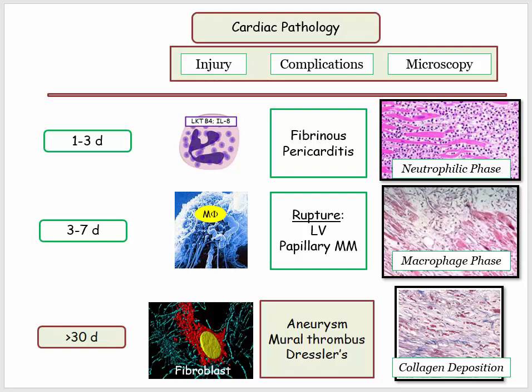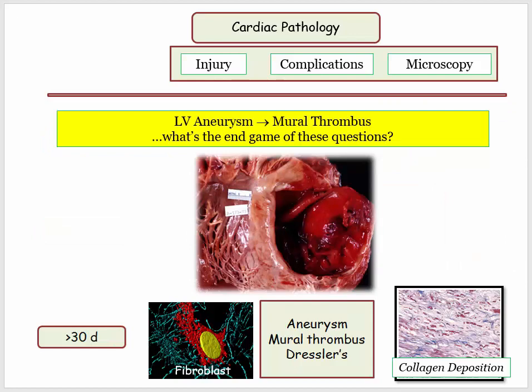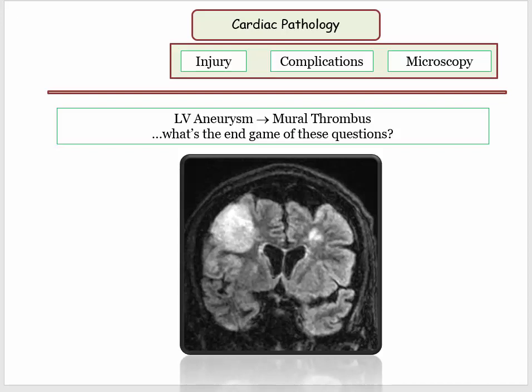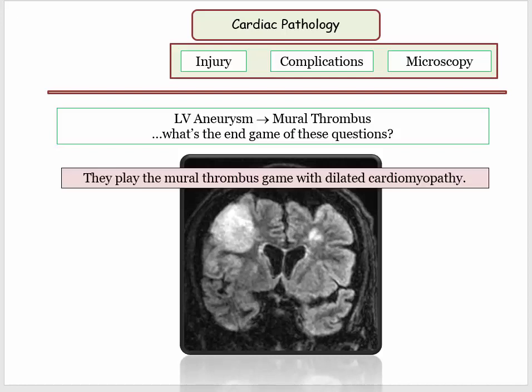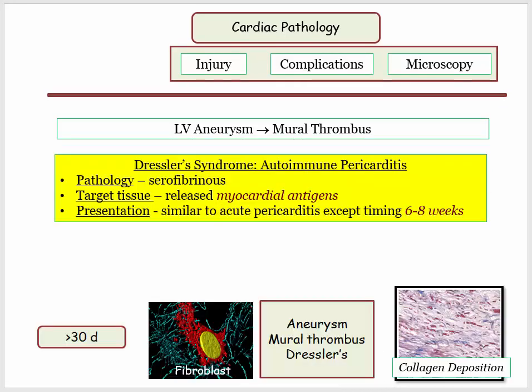What will this set of derivatives look like? For LV aneurysm, they can ask the predominant tissue type — type 1 collagen — but aneurysm complicated by mural thrombus is more exciting. They present a patient who had an anterior wall MI six weeks ago and now has a stroke — answer: mural thrombus or LV aneurysm. They also play the mural thrombus game with dilated cardiomyopathy. For autoimmune pericarditis, the pathology is serofibrinous exudate. The unique derivatives are released myocardial antigens as the target of autoimmunity, and the timing — week six through eight — with positional chest pain or friction rub described in the vignette.